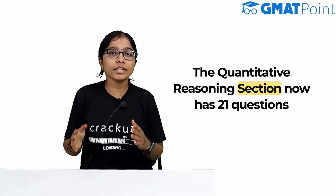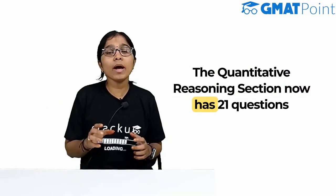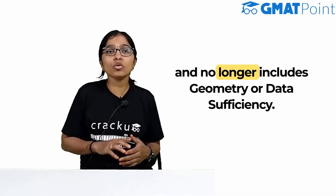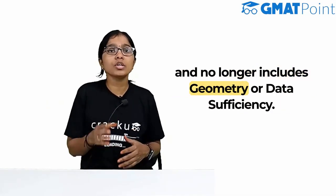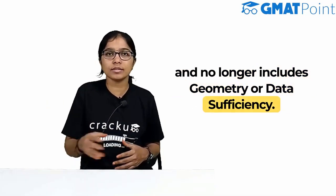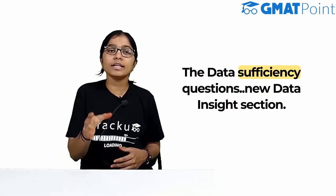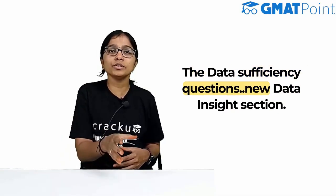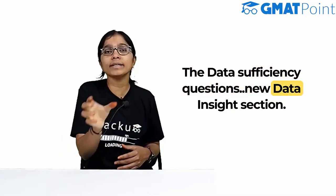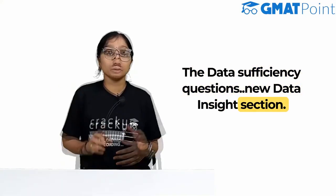The Quantitative Reasoning section now has 21 questions and no longer includes geometry or data sufficiency. The data sufficiency questions are now a part of the new Data Insights section.